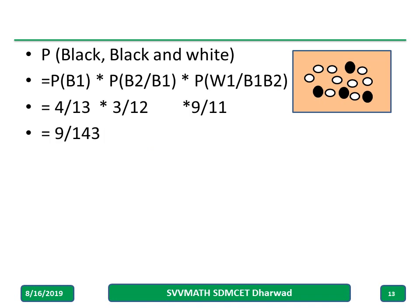Similarly, for black, black, white: the probability of getting the first black is 4 by 13. Once 1 black is removed, remaining black are 3 and total are 12, so the next black is 3 by 12. Then for white, there are 9 whites out of 11 remaining balls. Simply multiply these three values to get the answer.